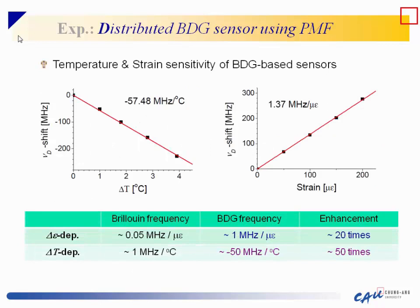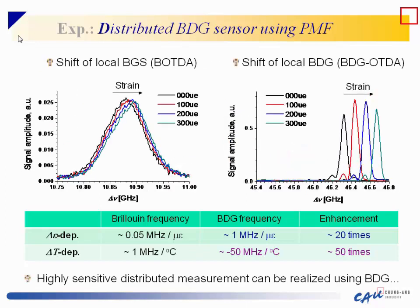This graph shows the temperature and strain sensitivity of BDG-based sensors. The temperature sensitivity is minus 50 MHz per degree and strain sensitivity is around 1.37 MHz per microstrain. Compared to ordinary Brillouin sensors, strain dependence is about 20 times larger and temperature dependence about 50 times larger. The BDG-OTDA result shows a much larger spectral shift than BOTDA for the same applied strain at the same spatial resolution.